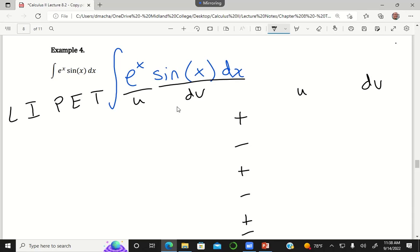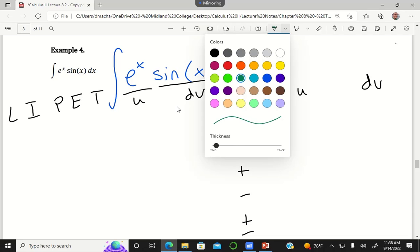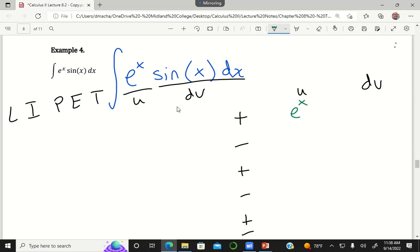I have u. I've got dv. My u is e to the x. My dv is sine of x. If I take enough derivatives of e to the x, when am I going to get to a zero? Never. Never.